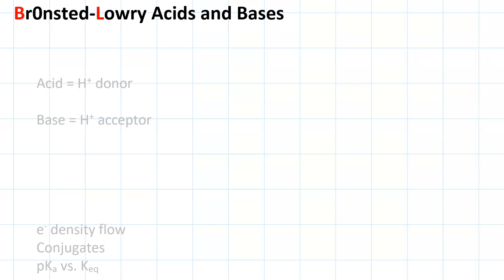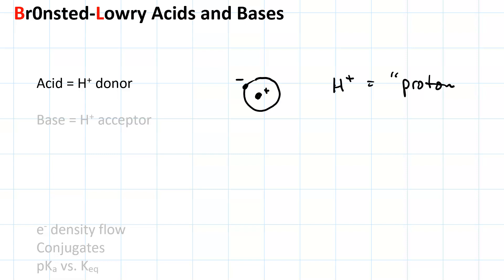Bronsted-Lowry acids and bases. According to the definition, a Bronsted-Lowry acid is a hydrogen ion donor — an H-plus ion. Since a hydrogen atom consists of a single proton in the nucleus and a single electron, when you ionize it by removing the electron, you get a proton. So we say H-plus is a proton. In the same terms, a Bronsted-Lowry base is a hydrogen ion acceptor — a proton acceptor.